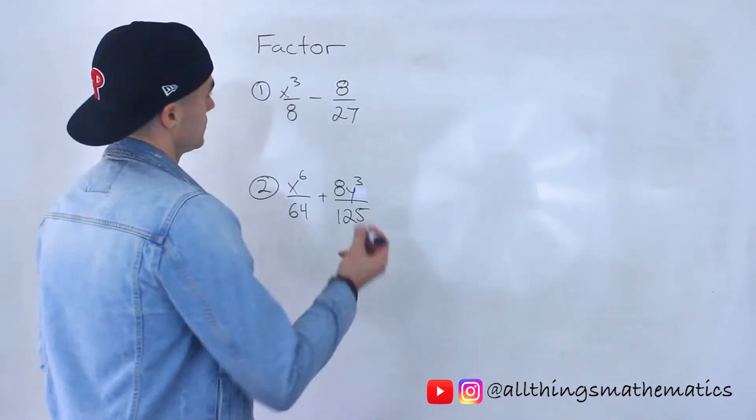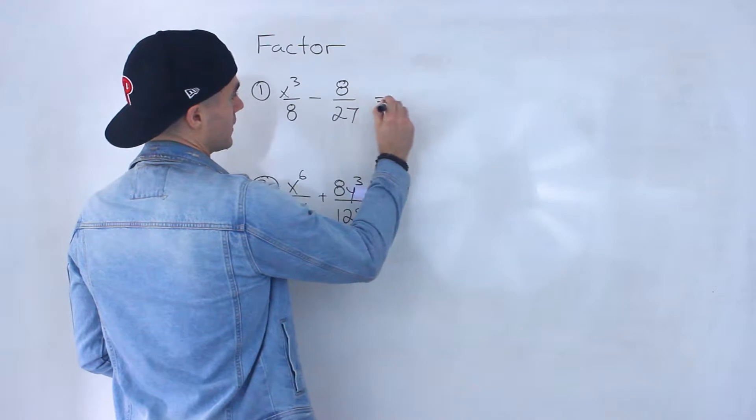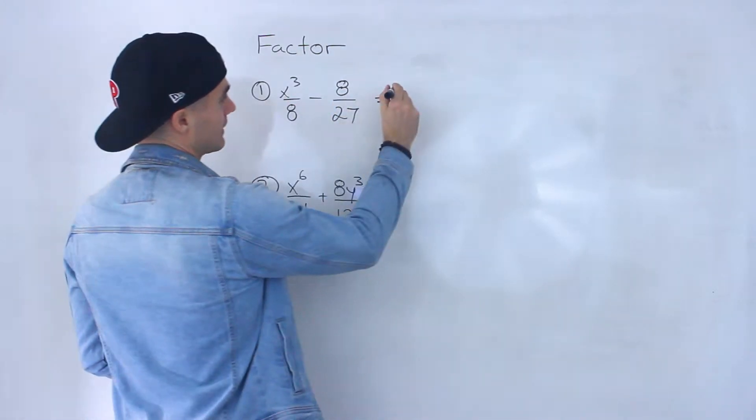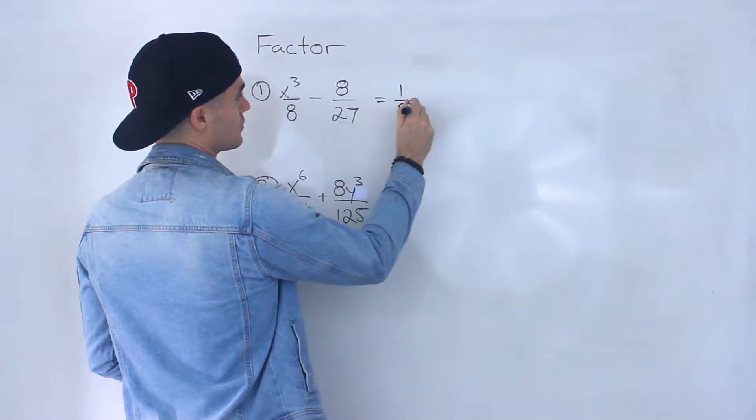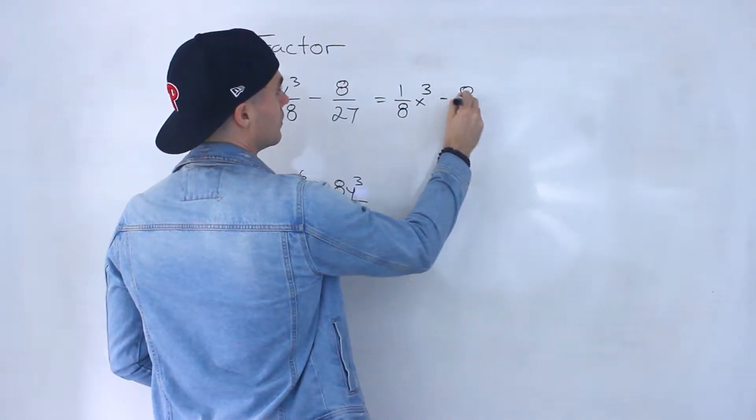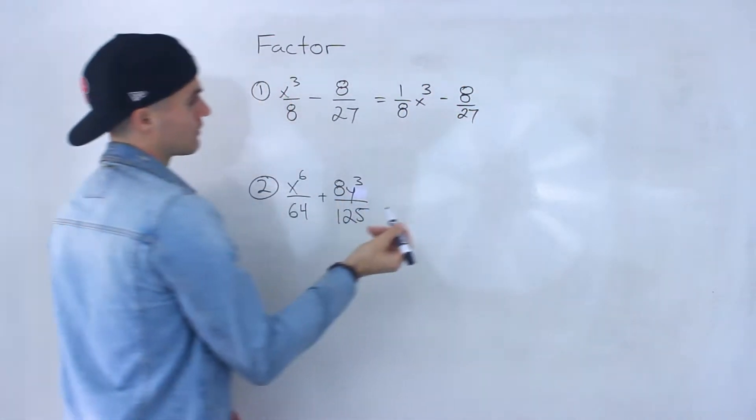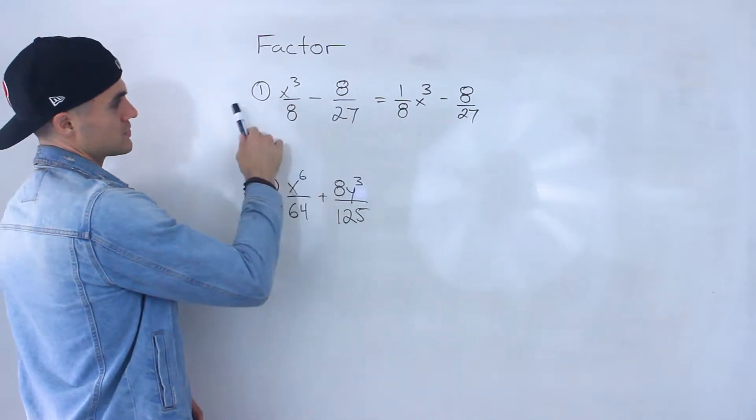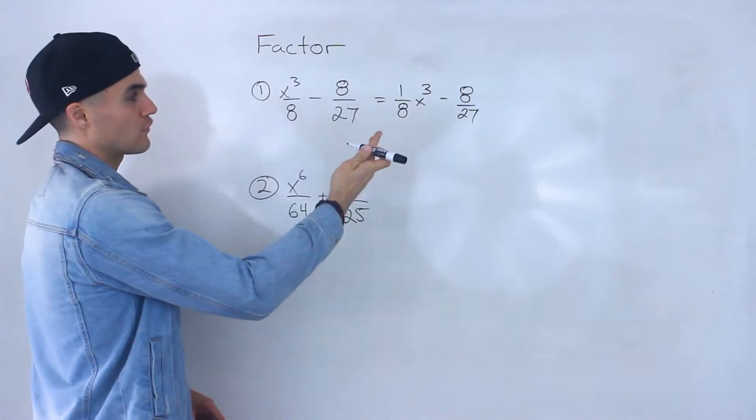So what I'm first going to do is I'm actually going to take this and I'm going to rewrite it. When I see something like this, I like to separate the fraction or the coefficient and the variable. Like that, right? So I just took that 1 over 8 and just sort of put it in front here.